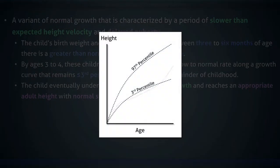The characteristic growth curve of children with constitutional delay of growth in puberty begins normal, then dips to the third percentile or just beneath it. It then remains there for much of middle childhood before increasing while crossing several percentiles. Notice that the relatively consistent stretch in the middle remains parallel to the growth curve at the third percentile.